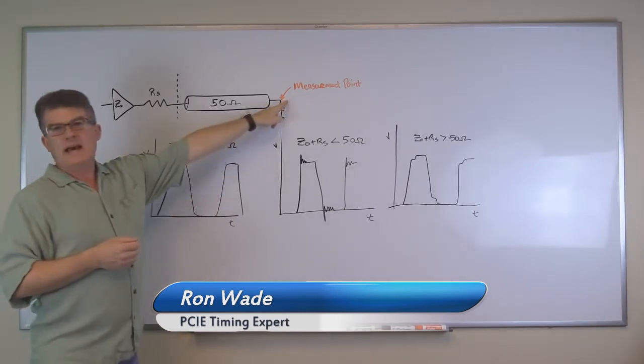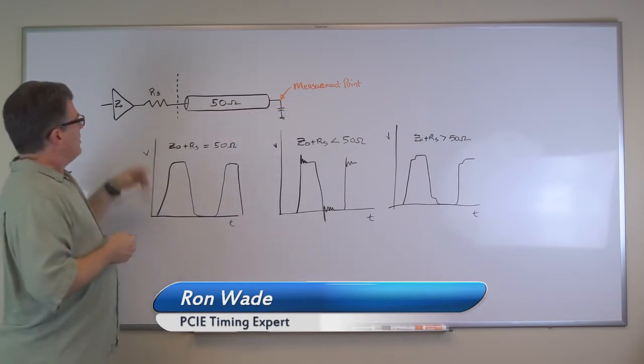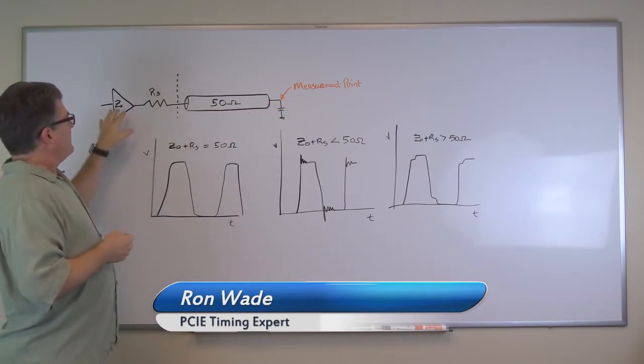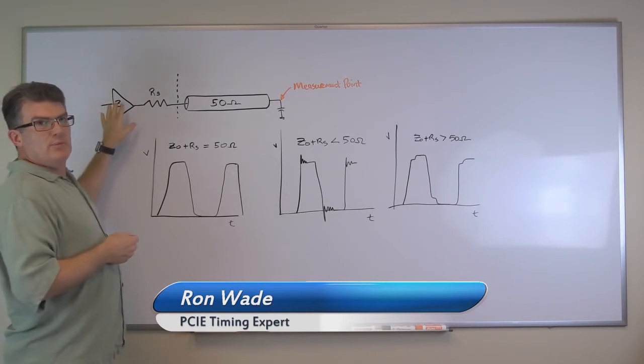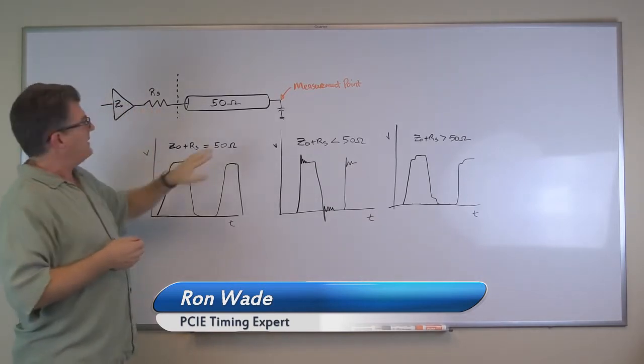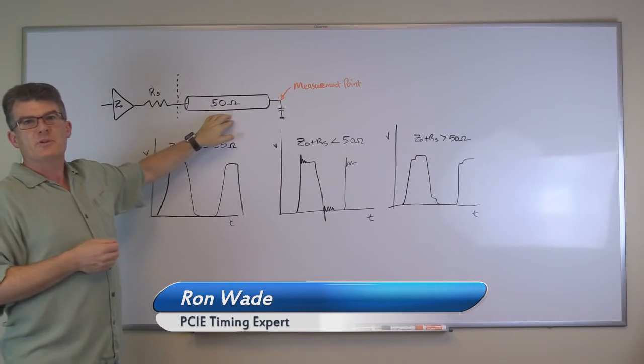All of our measurement points are going to be at the load right here. What we want to do is have the sum of the output impedance of the driver and the series resistor exactly equal to the impedance of the transmission line.